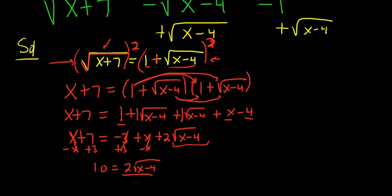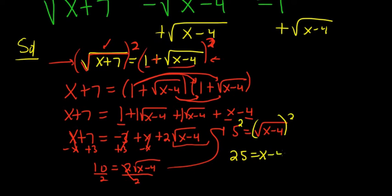Almost there. Divide by 2, divide by 2. So we get 5 equals square root of x minus 4. And again, to eliminate the square root, we will square both sides. Square this and square this. So you get 25 equals x minus 4. And finally, we add 4, and we are in good shape because we get x equals 29.